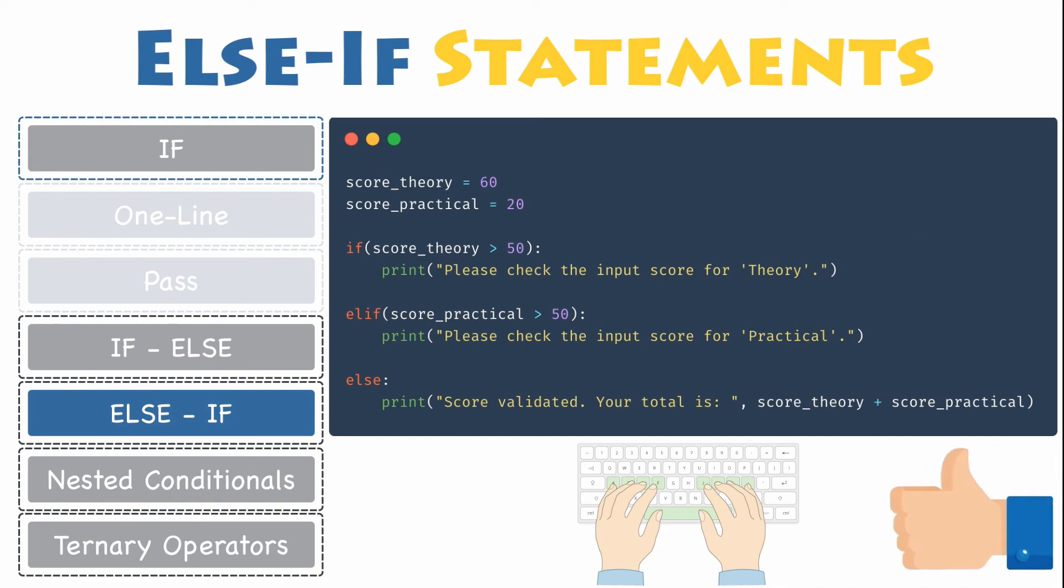And here you are. You are now able to check whether an expression is met and evaluate another condition when the first one is false. Then finally, have a default case when none of them is true.